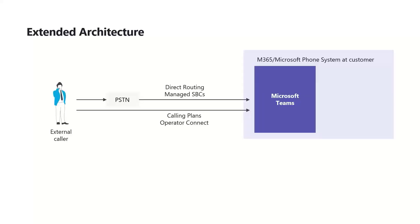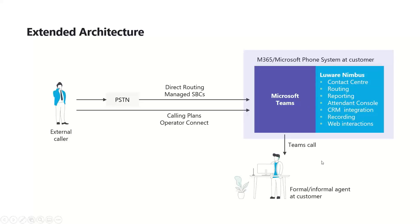Just to give you a high-level overview of how we're actually integrating into Teams: there are lots of different ways to integrate a contact center or phone system solution, but they're not all the same. Our philosophy at Aluware is to integrate as natively as possible. We're totally agnostic in terms of how you deliver calls to Teams — whether that's direct routing, calling plans, or operator connect. We only pick the call up once it's delivered to Teams, and we use the Microsoft APIs to distribute and add intelligence to Teams voice calls.